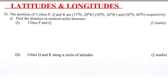Hello and welcome to the lesson, Latitudes and Longitudes. The position of three cities P, Q, and R are 15 degrees north 20 degrees west, 50 degrees north 20 degrees west, and 50 degrees north 60 degrees east respectively.